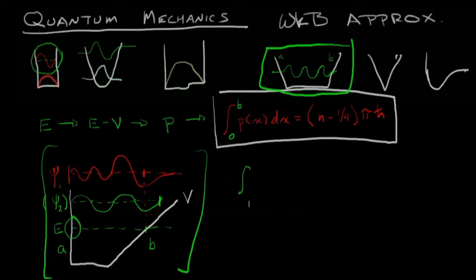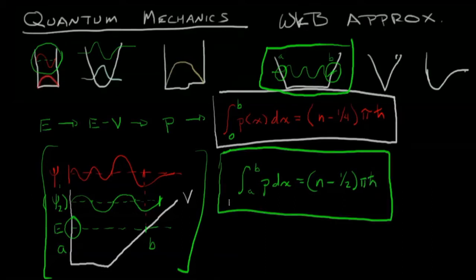What we would do is we'd integrate from A to B of p dx, and that would equal n minus, well, it's going to be n minus a quarter here, and it's going to be n minus a quarter here, so that'll be n minus one half pi h-bar. Now once we're able to identify the total momentum, which is basically what we're doing when we're doing p dx, we can use that to identify the energy states.